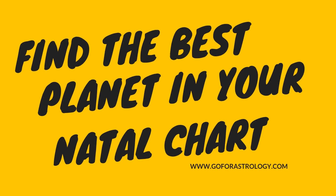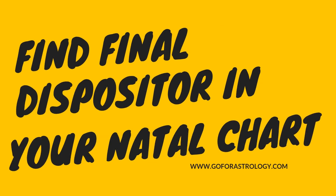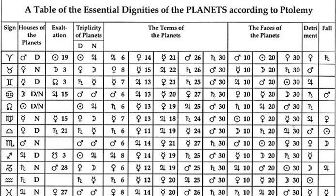Hello my dear friends! Today I want to teach you how to discover the final dispositor in your natal chart. To find your final dispositor is based on the traditional system of rulership — which planet has the most power in your chart. To use this technique you need to know first of all the traditional rulership of each sign.